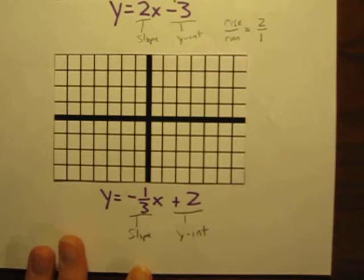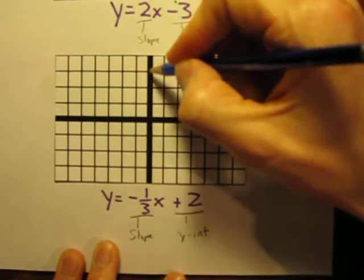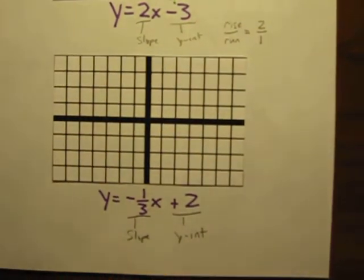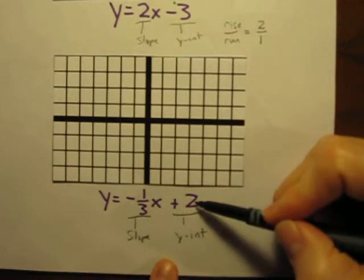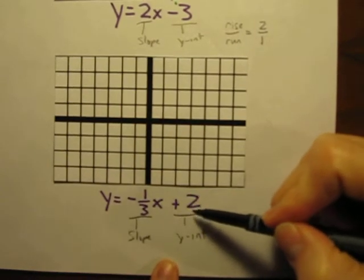Where do we begin? The one place on this graph that we know our line will pass through is our y-intercept. This is our y-axis right here. Our line is going to cross the y-axis at positive 2. That's our y-intercept.